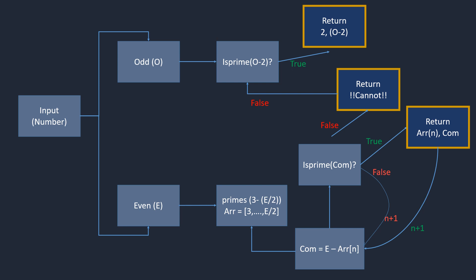Since one prime is 2, we can find the other easily. We take the odd number o and check whether o minus 2 is prime or not. For example, if the user entered 7, which is odd, we subtract 2 from 7 to get 5, and check whether 5 is prime. If 5 is prime, we return 2 and 5 as the output. If that check returns false, we return 'cannot'.